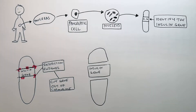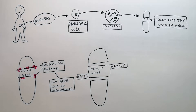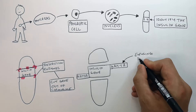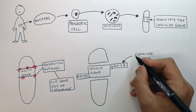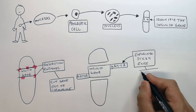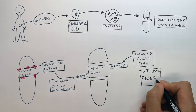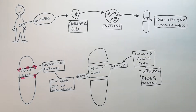We've now identified and cut out the insulin gene, exposing the sticky ends. Sticky ends are unpaired bases on the gene.